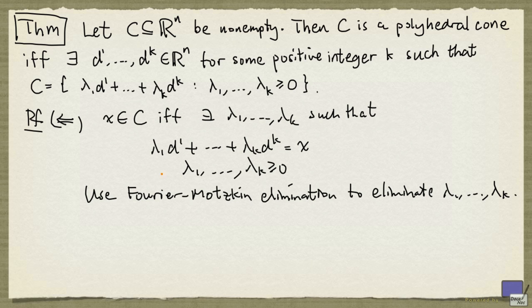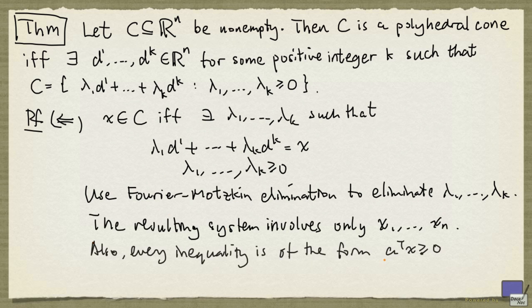The resulting system will define precisely the elements x that are in C. Also in the final system, the constant term must be zero, because if you look at these constraints here, and since there is no constant term in any of these, after applying Fourier-Motzkin elimination, none of the inequalities will have a constant term. And so C can be defined by a system of linear inequalities of this form, therefore C is a polyhedral cone.